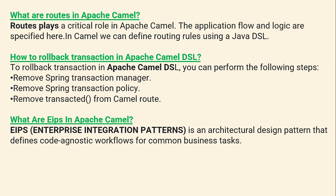How to rollback a transaction in Apache Camel DSL? To rollback a transaction in Apache Camel DSL, you can perform the following steps: Remove Spring Transaction Manager, Remove Spring Transaction Policy, and Remove Transacted from Camel Routes.